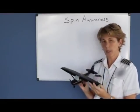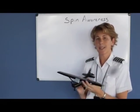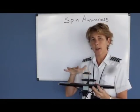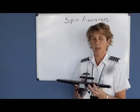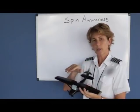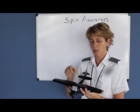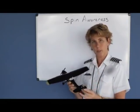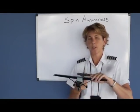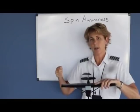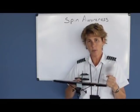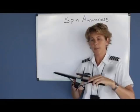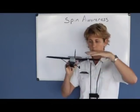To recover from a spin, simultaneously pull the throttle to idle, make the ailerons neutral, and then use full opposite rudder to stop the spin. Remember, it was the rudder that got us into this — it's the rudder that's going to recover us. So once we simultaneously go throttle idle, ailerons neutral, and full opposite rudder to stop the spin, now we're just in a stall and we're falling.